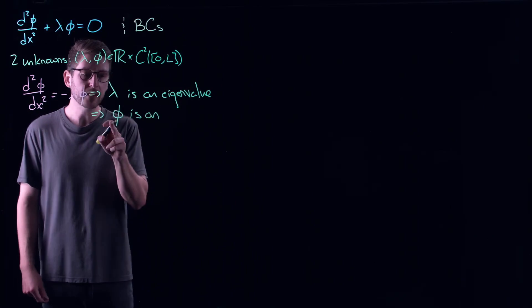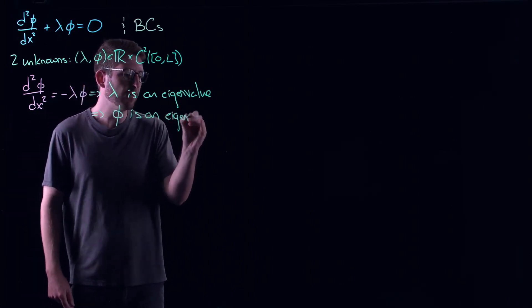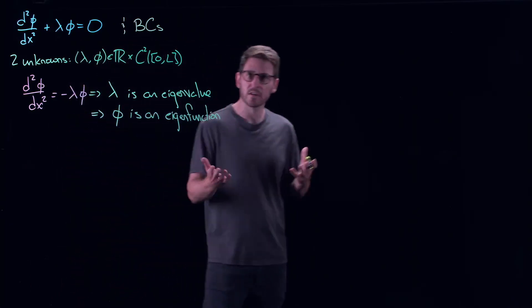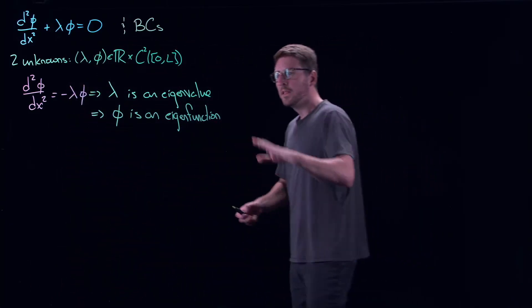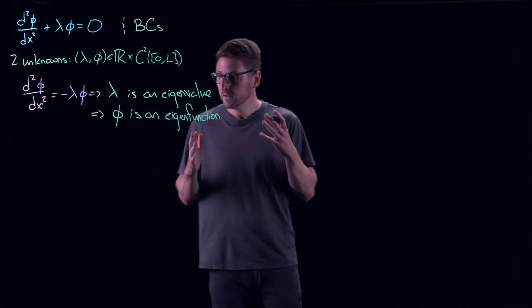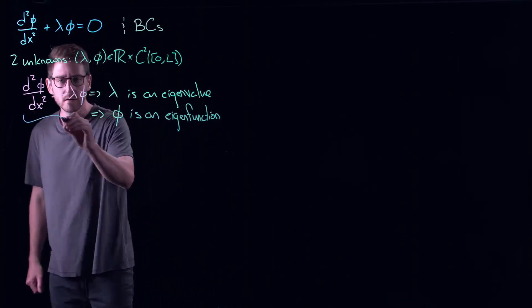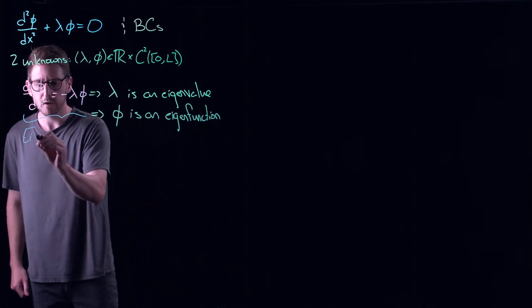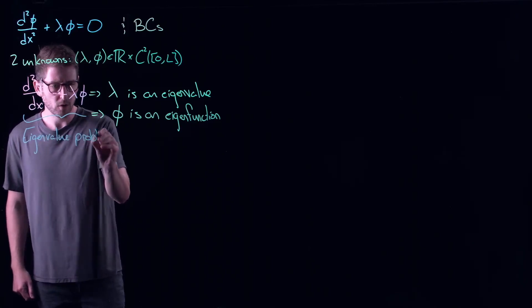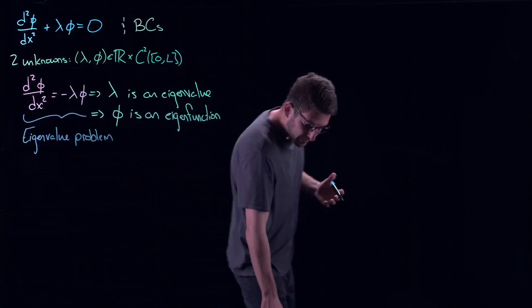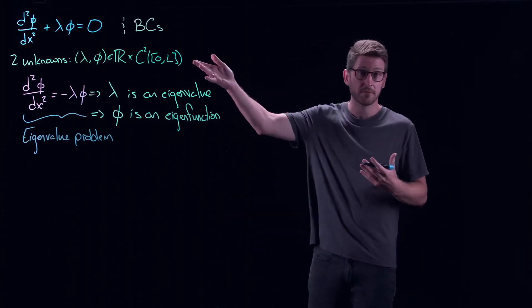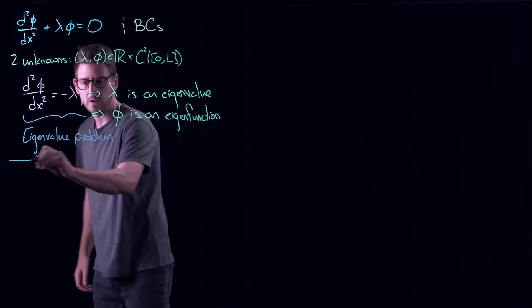This tells us that lambda is an eigenvalue of the linear operator. In this case, our linear operator is the second derivative. We have the minus here by convention. But then, this also tells us that phi is an eigenfunction, not an eigenvector. This is the beautiful thing about mathematics - you can put eigen in front of anything and it makes sense. Here, because we're talking about functions, this is an eigenfunction, but it's the same basic idea. And this right here is what we call an eigenvalue problem. That means there's some linear algebra involved, or at least some infinite dimensional linear algebra, which is what we call functional analysis.